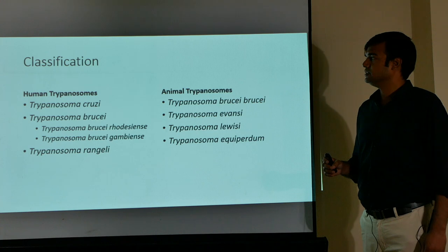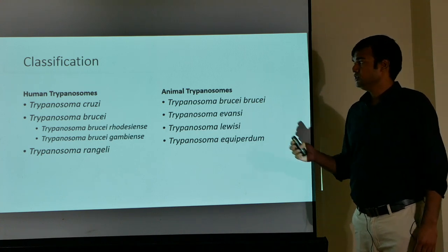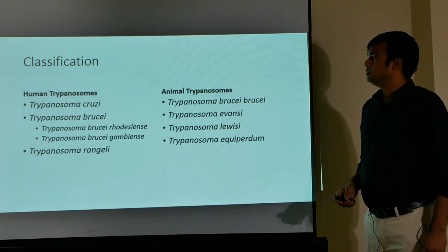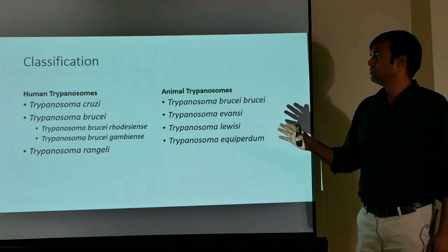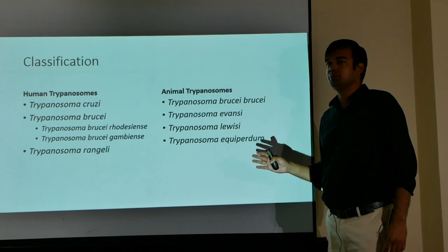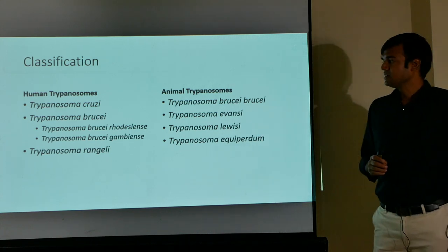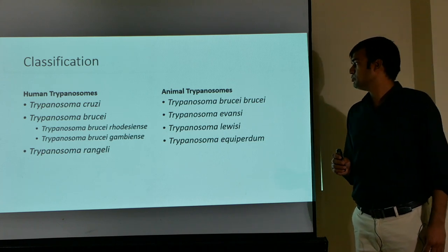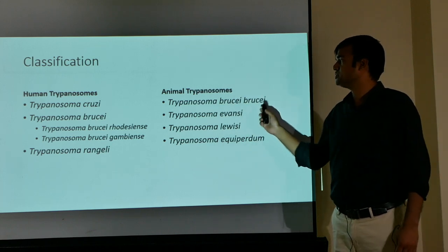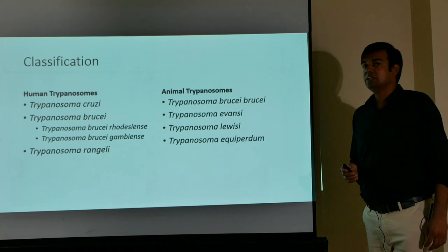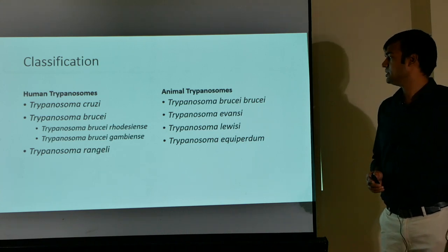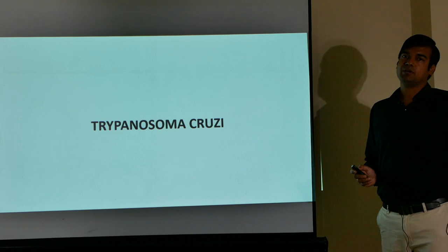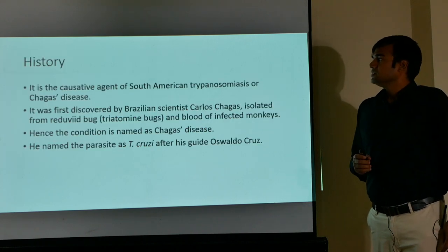Trypanosomes are classified on the basis of where they are causing disease. In humans, examples are Trypanosoma cruzi and Trypanosoma brucei, which has subspecies: T. brucei rhodesiense and T. brucei gambiense — both human pathogens. There is also T. rangeli. In cattle, pathogens include T. brucei brucei, T. evansi, T. luisi, and T. equiperdum.